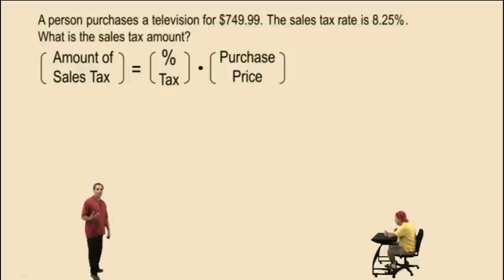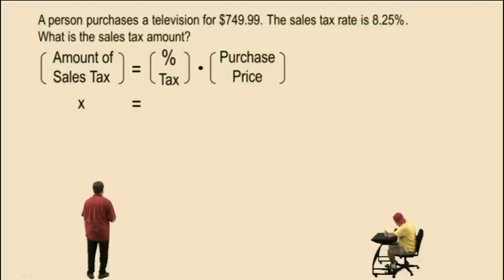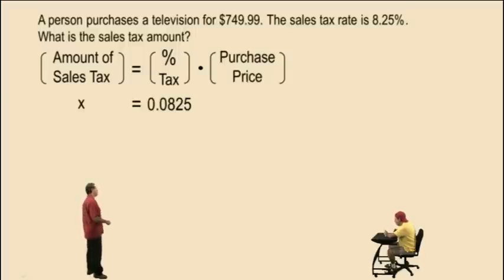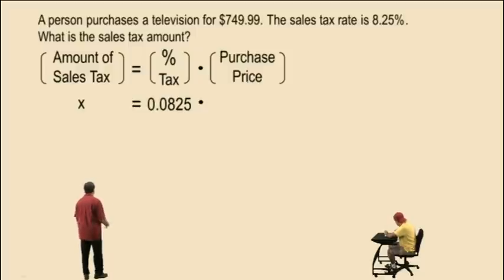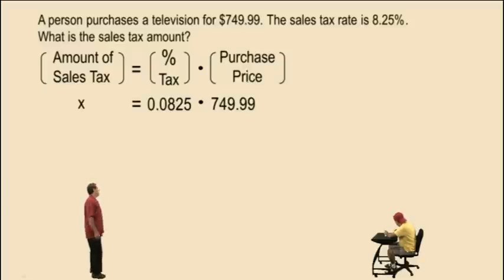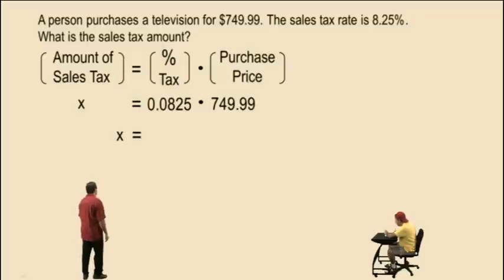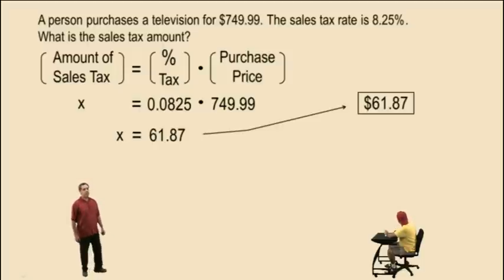Percent sales tax as a decimal is 0.0825 — remember, you move the decimal two places to the left. The purchase price is $749.99. So to calculate the amount of sales tax, you multiply those two numbers together and you end up with $61.87.